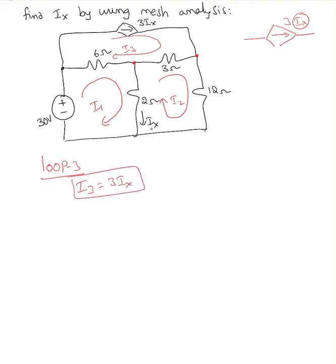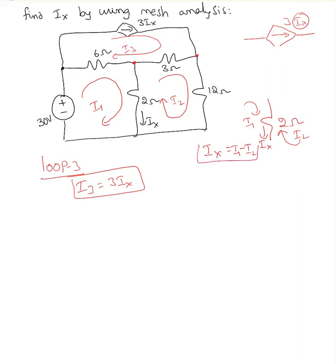At the same time, even though my goal is finding Ix, whenever you are doing mesh analysis, your goal will shift from finding the necessary quantity to finding loop currents. So I can rewrite Ix — if you look at Ix, that current flows through the two-ohm resistor, with I1 in this loop and I2 in this loop. So Ix equals I1 minus I2. Substituting: I3 equals 3 times (I1 minus I2). This is one of the equations.